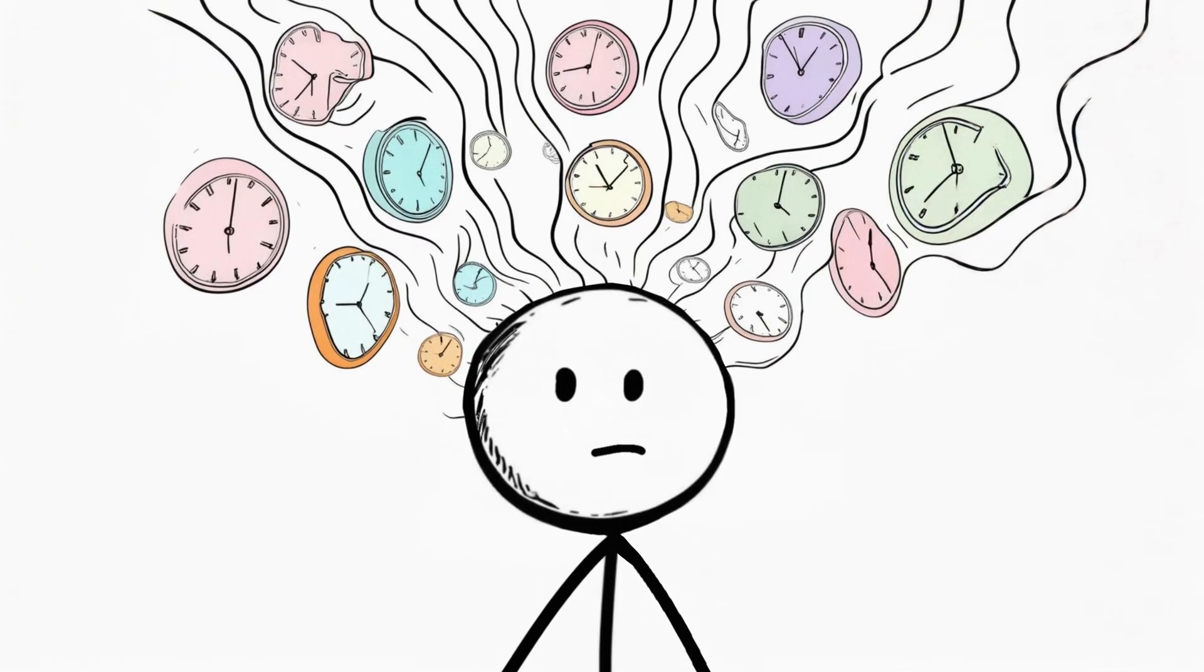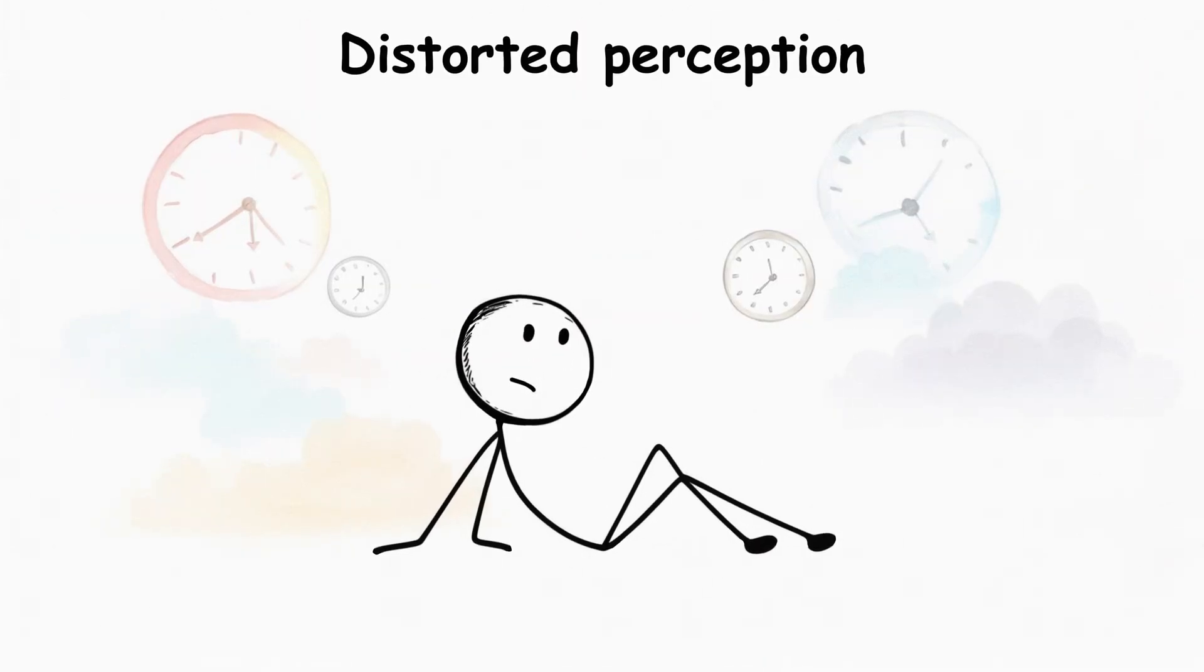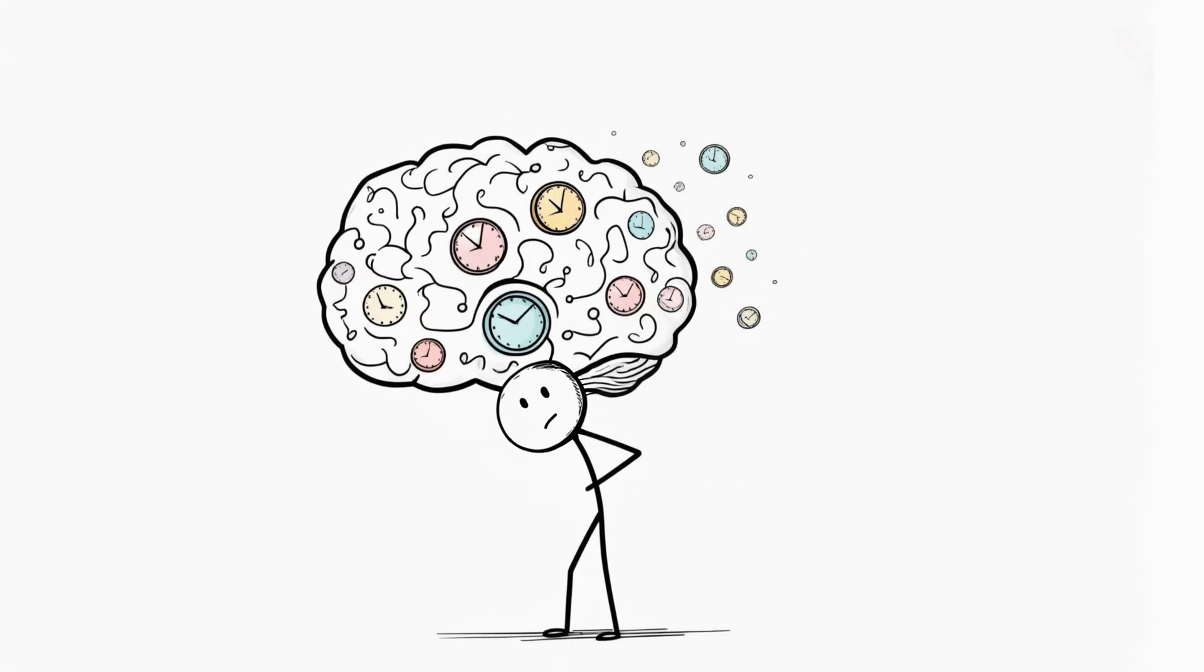In depression or anxiety, it becomes distorted. In schizophrenia, it collapses completely. In sleep, in meditation, in ecstasy, time disappears altogether. So maybe time is not a property of the universe, but a function of the brain?